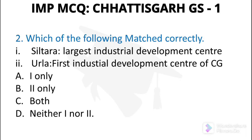Question number 2: Which of the following are matched correctly? Sintara is the largest industrial development center, and Urla is the first industrial development center of Chhattisgarh. Both statements are correct, so this will be option number C.